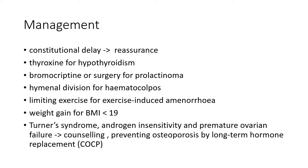Now let us see about the management of primary amenorrhea. Treatment depends on the cause. For constitutional delay, reassurance should be given to the patient and her parents. For hypothyroidism, thyroxine should be given. For prolactinoma, bromocriptine or surgery should be done. For hematocolpos, hymenal incision should be done. If the cause is exercise-induced amenorrhea, exercise should be limited. Weight gain should be encouraged if the BMI is less than 19. For Turner syndrome, androgen insensitivity, or premature ovarian failure, counseling should be given and steps should be taken to prevent osteoporosis, using long-term hormone replacement such as combined oral contraceptive pills.